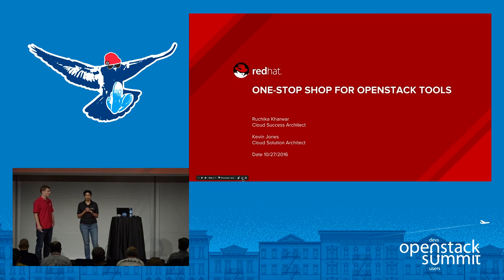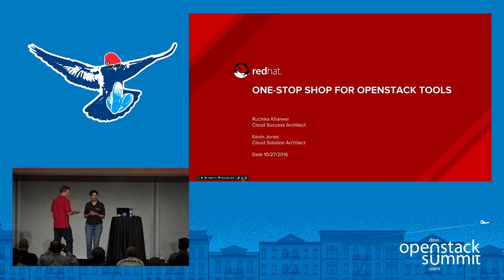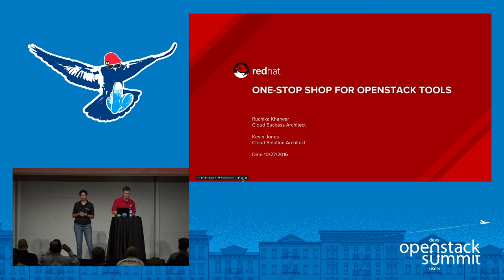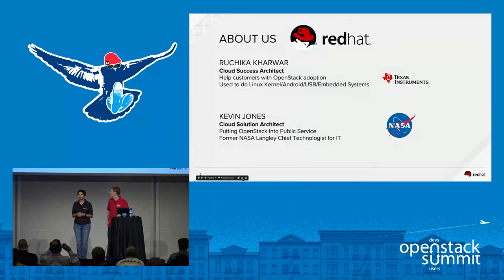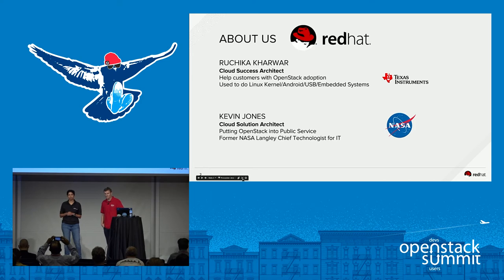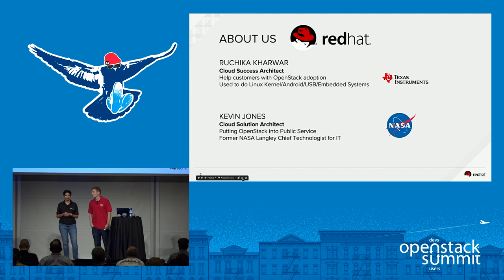Quick introduction. I'm Ruchika, a CSA Cloud Success Architect at Red Hat. I have a very varied background — embedded systems, microprocessors, worked on the Linux kernel, Android subsystem, and then I joined a startup where I got introduced to Ceph and OpenStack. Now I work at Red Hat helping customers adopt OpenStack and develop best practices.